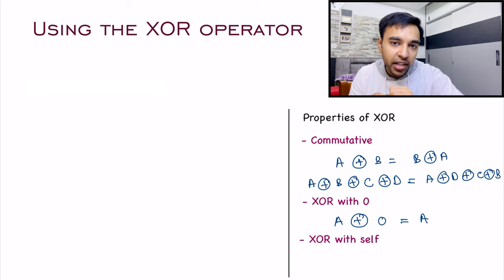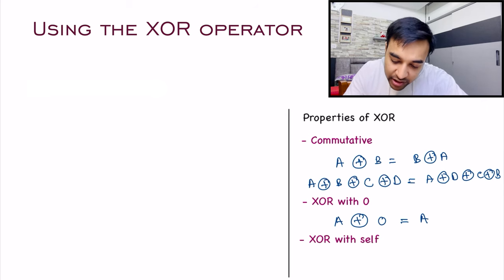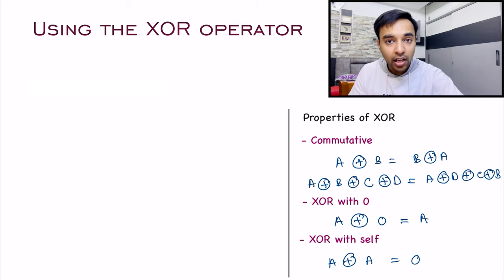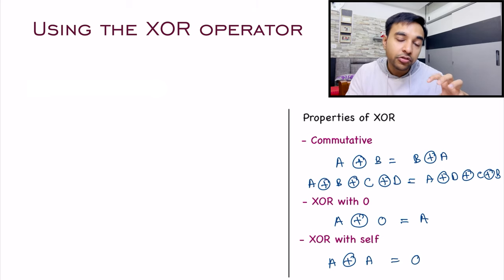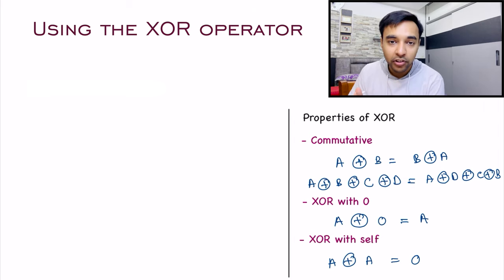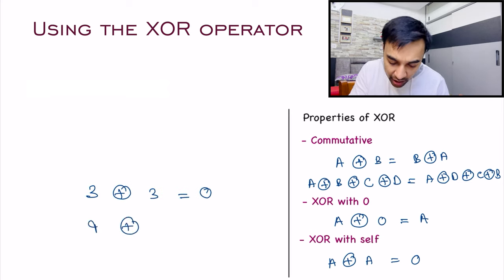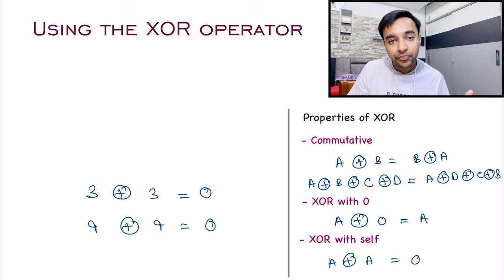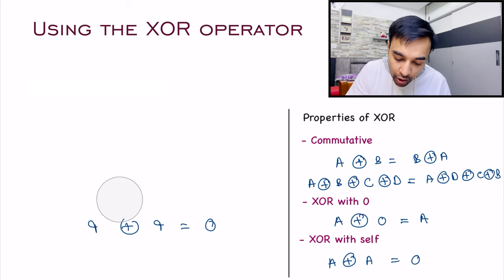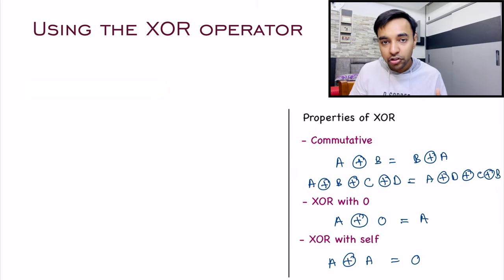The second important property is that if you XOR a number with zero, the result is always the original number. So 2 XOR 0 equals 2, 3 XOR 0 equals 3, and 5 XOR 0 equals 5. The last property you must know is XOR with self: A XOR A will always be 0. Any number XOR'd with itself gives 0. So 3 XOR 3 equals 0, and 9 XOR 9 equals 0. We are going to take help of these three properties to come up with a solution.